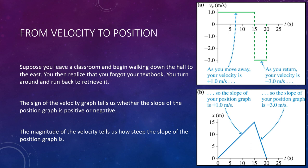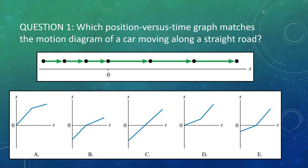That is a little vague on how to exactly make those graphs — we will introduce that in our next video. Before that, let's go through a few questions. I'll read the question and be quiet for a few seconds — I recommend you pause the video to think about your answer before I reveal it. Question one: which position versus time graph below matches the motion diagram of a car moving along a straight road as shown?